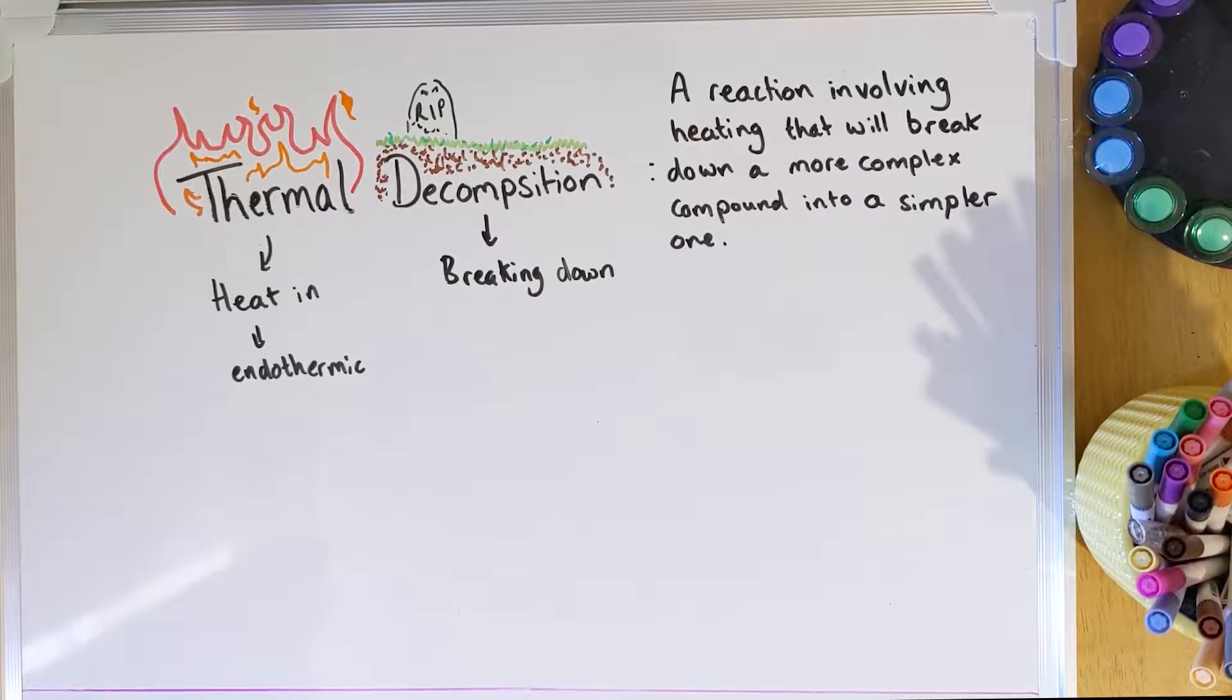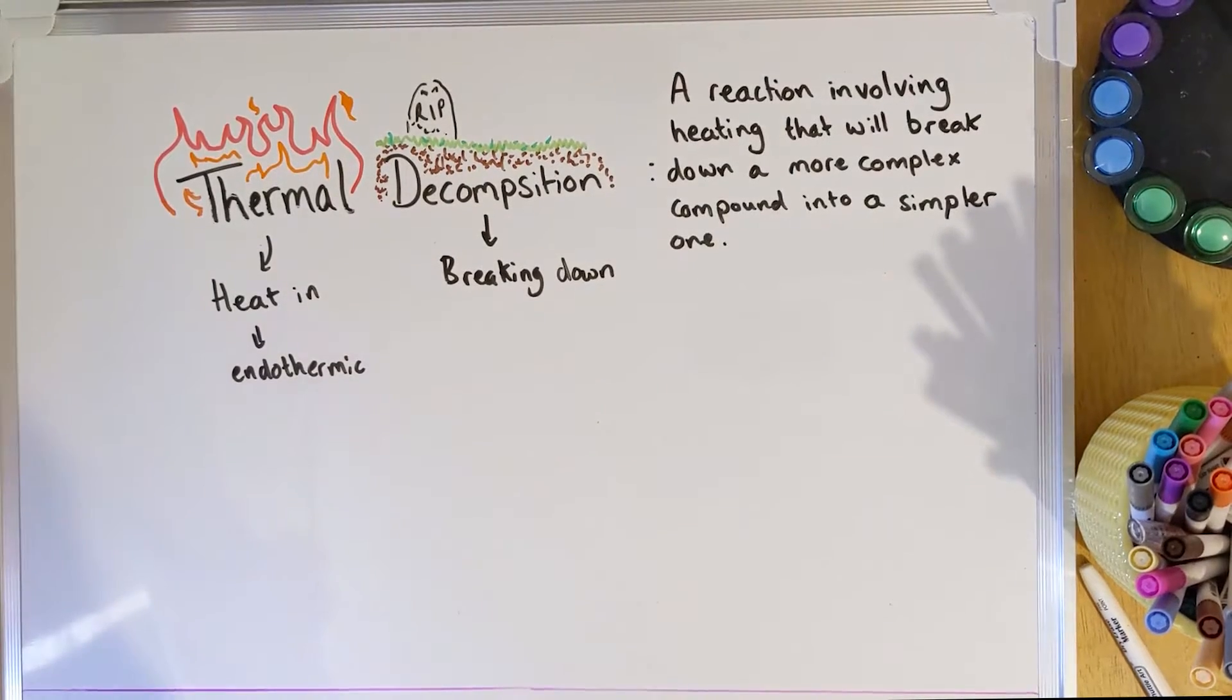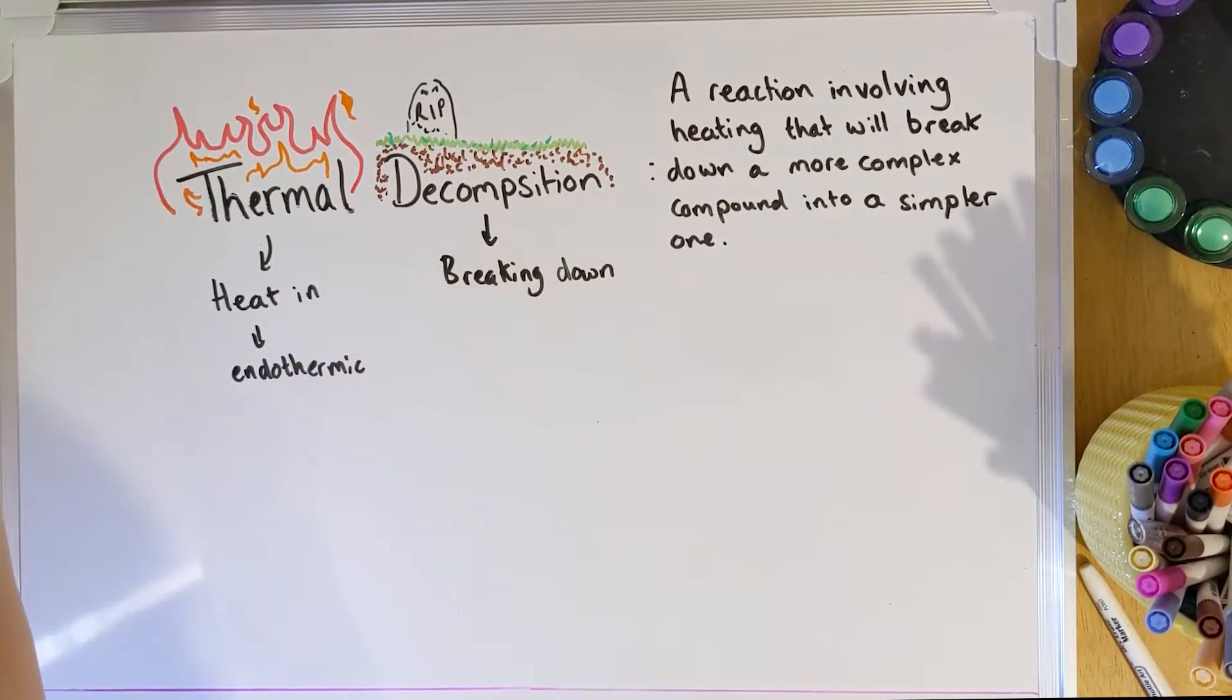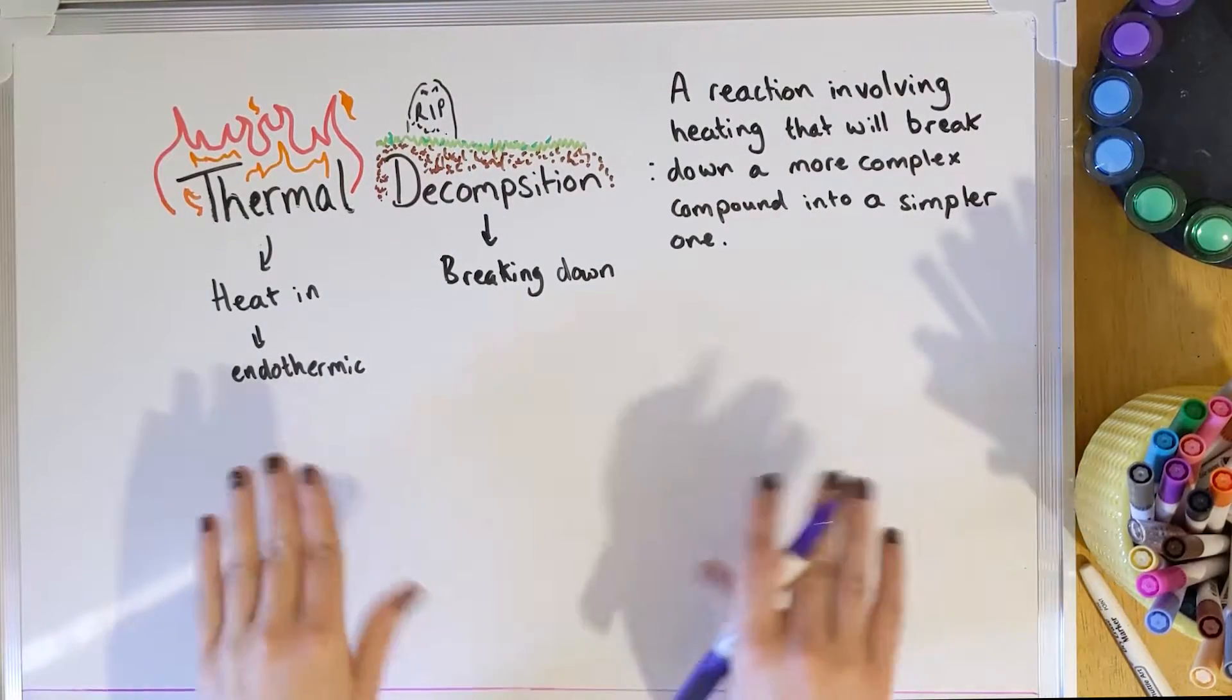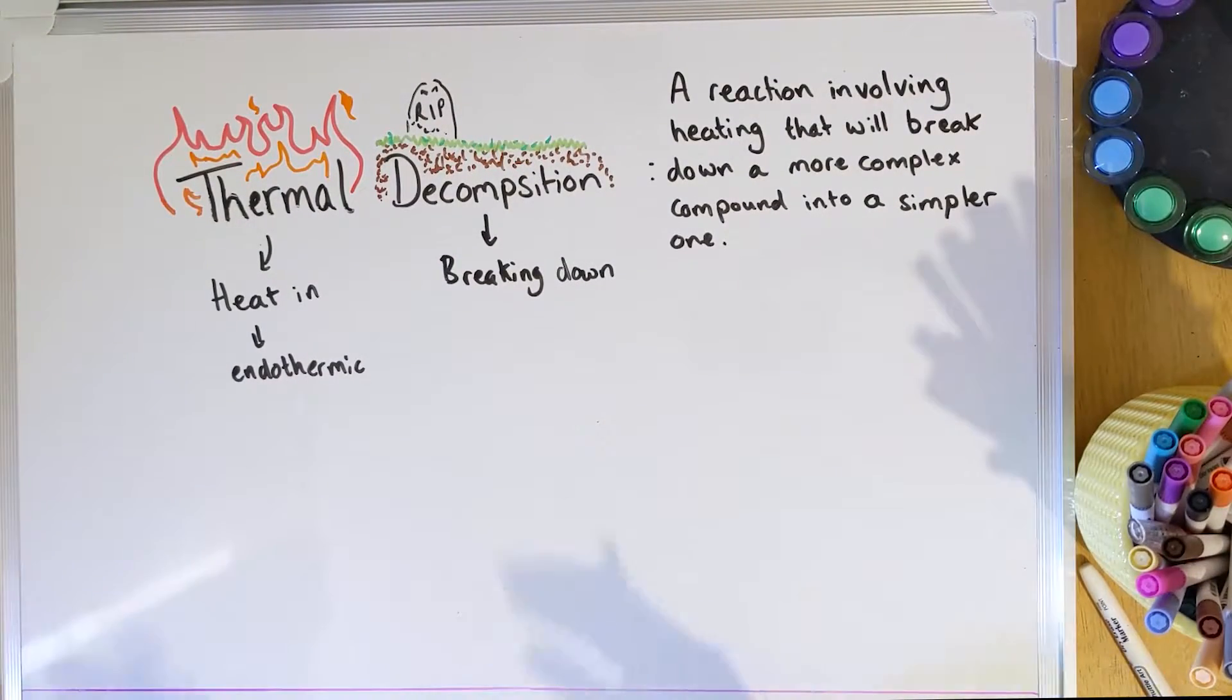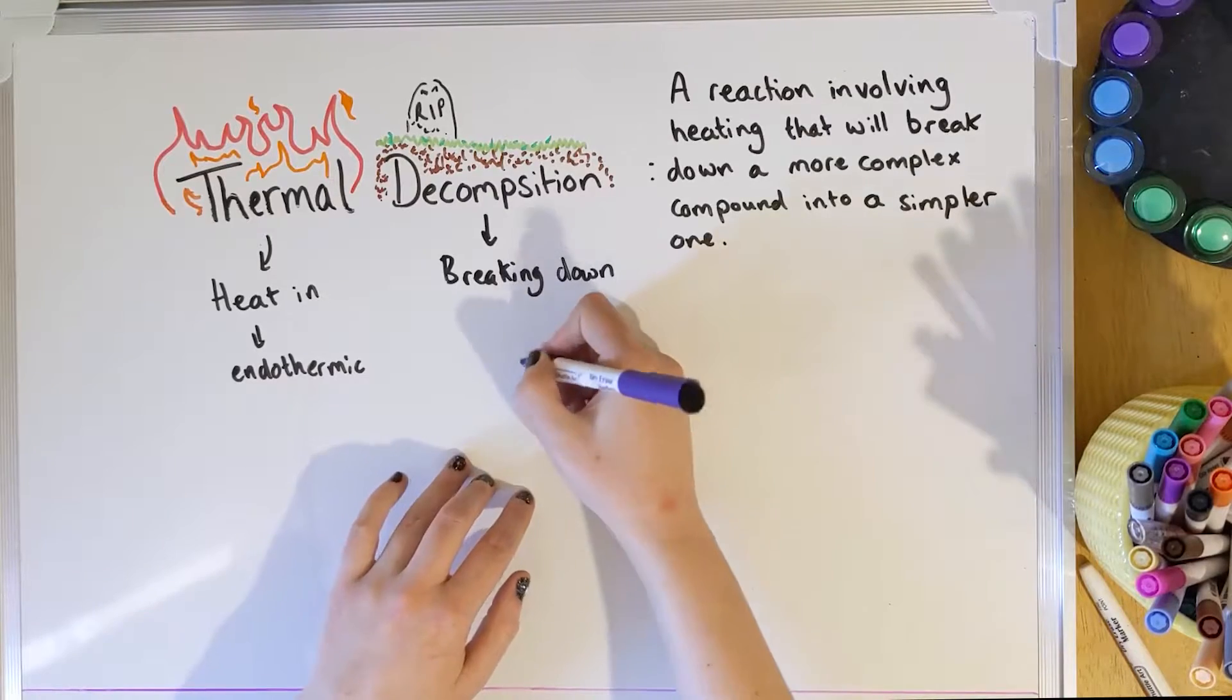That's a lot to take in, so let's break this down. So it's a reaction involving heating and it's going to break down something more complicated into something simpler. So we've got a general form that we can use here. General formulas, remember, are templates that we use to work out other types of reactions that are the same. So our general formula...